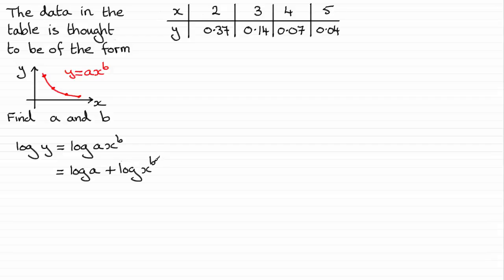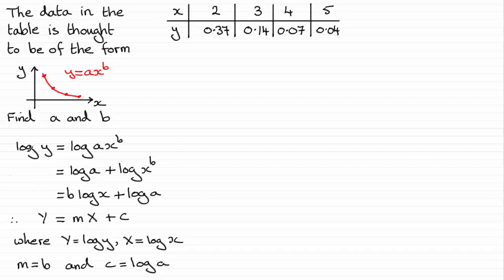And then we use the power rule to bring this b to the front of the log x. So if you do that, and I've also rearranged the terms, we've got it equals b times log of x plus log a. And what this means is that this is now in the form of y equals mx plus c, where we've got y equaling the log y, that's a variable quantity, and we've got the x being the same as log x, that's a variable quantity.